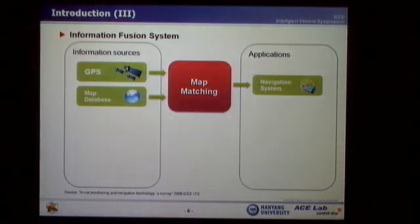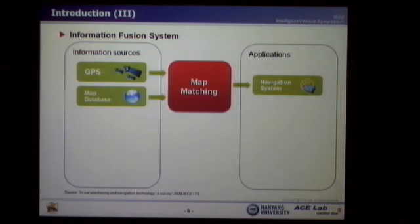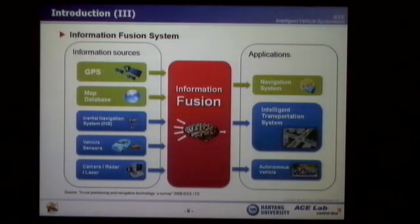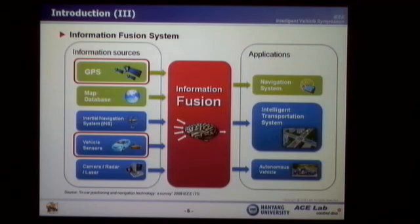Nowadays, the GPS and map database matching algorithm is used for navigation systems. However, since this simple algorithm is hard to provide accurate and reliable position information, it is not suitable for ITS applications. Therefore, additional sensor candidates such as inertial navigation system, vehicle sensors, camera, or range sensors are proposed for the information fusion algorithm. In this project, we focused on the integration of GPS and vehicle sensors.